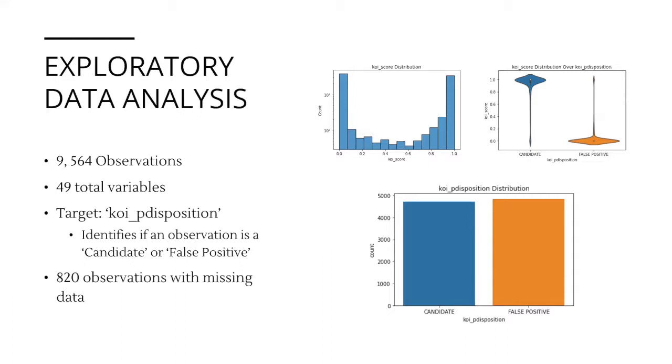This data set was updated one month ago and is a collection of observations from NASA and Caltech. There are a total of 49 variables and 9,564 observations. Our target variable is binary and identifies whether an observation is a candidate or a false positive. The target variable is close to evenly distributed, suggesting we have a balanced data set.